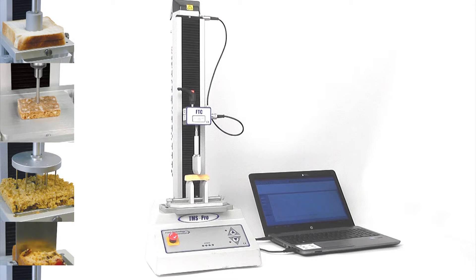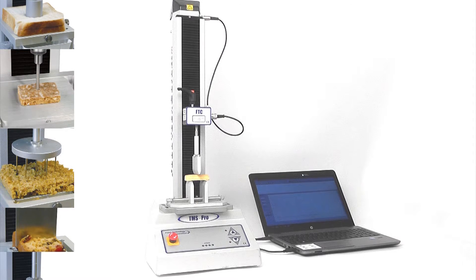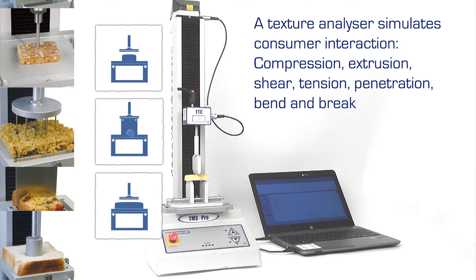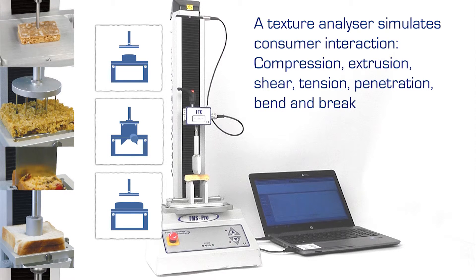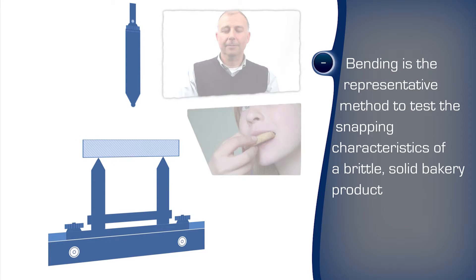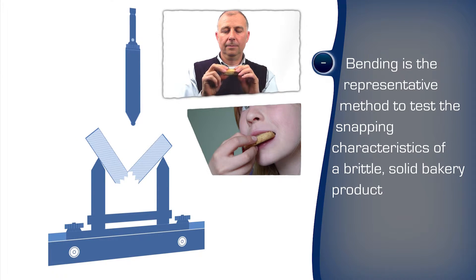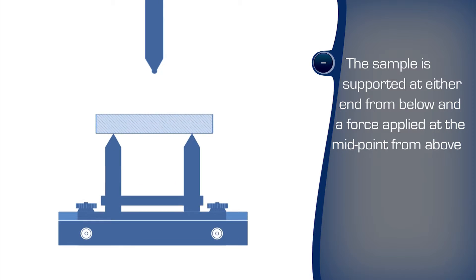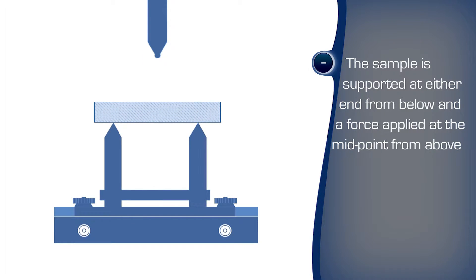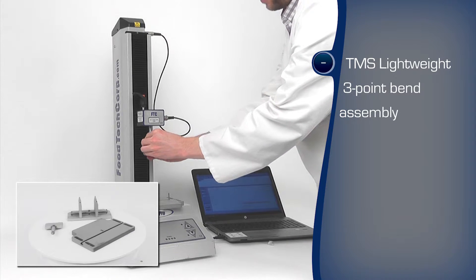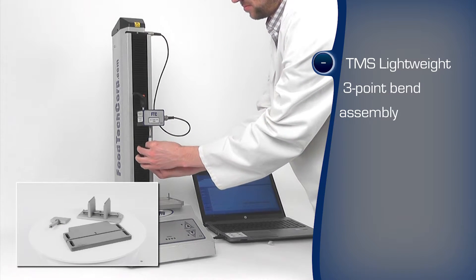A texture analyzer enables the measurement of attributes which reflect the consumer's experience by simulating the interaction: compression, extrusion, shear, tension, penetration, bend and break. Bending to break is the representative method for simulating a consumer flexing the product between the fingers and snapping it into smaller pieces. The hardness and firmness or softness attributes in flexible products may also be tested by compression, penetration, shear or tension. However, fracturability is best tested by snap, bend and break methods.